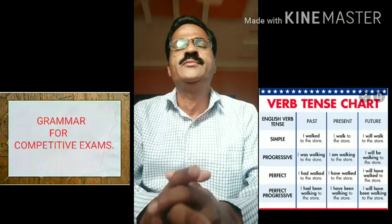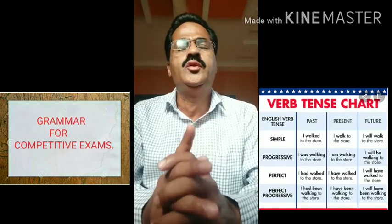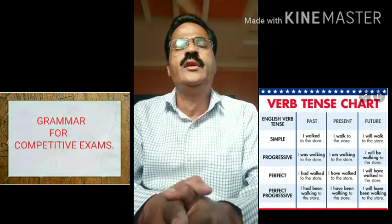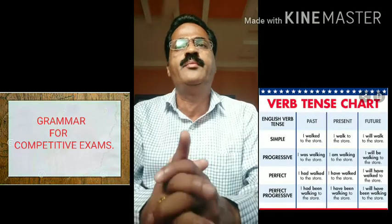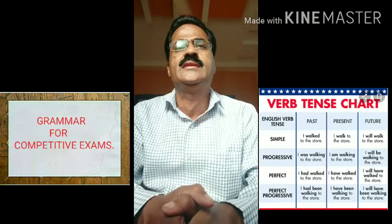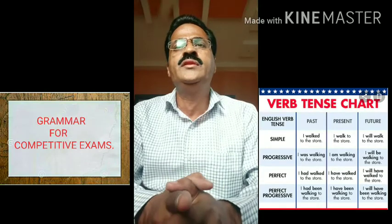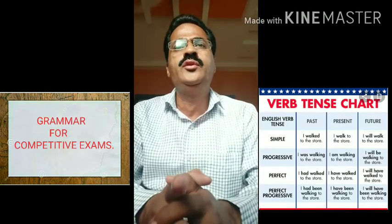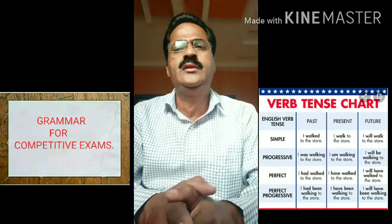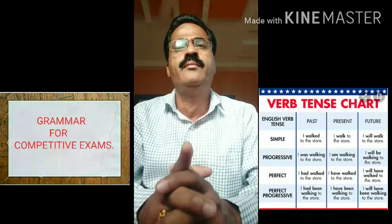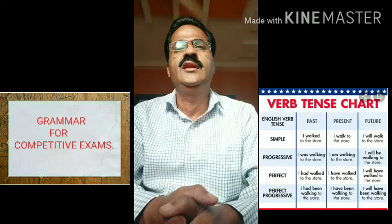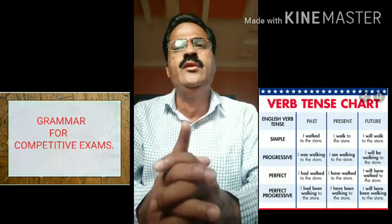There are four aspects of each type of tense, giving us a total of twelve types of tenses in English grammar — that is simple, progressive, perfect, and perfect progressive. Now it is time to learn how to use tenses in your writing. It may seem straightforward, but writers take a fair amount of creative license when deciding how to use tenses. Let us see some tips for using tenses in your writing.